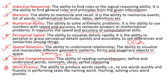The seventh factor is word fluency — the ability to produce words rapidly and use words quickly and fluently in performing tasks like naming words, rhyming, solving crosswords and puzzles. Word fluency means how fast you have your vocabulary and how fast you use words.